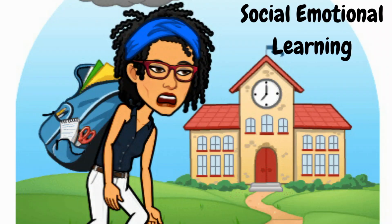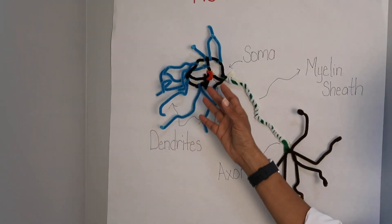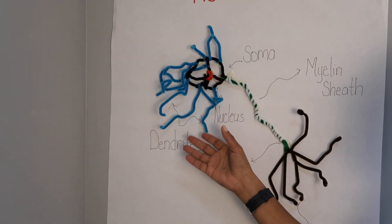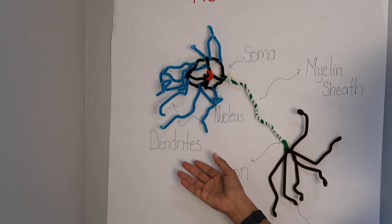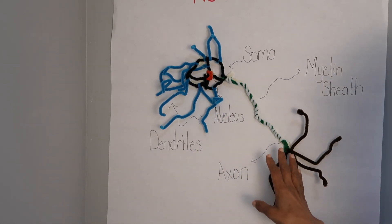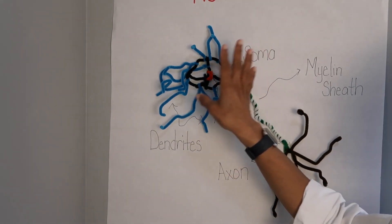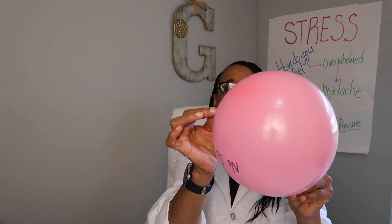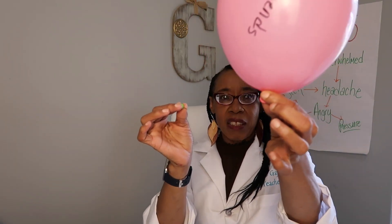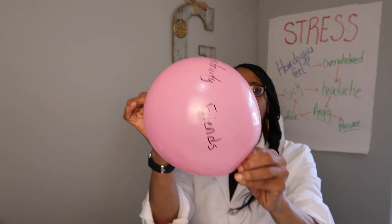I love social-emotional learning and getting kids to understand their brains. You learn something and it becomes part of your memory. You have to practice, and as you practice, the signals begin to shoot through. With social-emotional learning, I like to do activities that help students to recognize the anxieties or stresses that they're going through and how to release those stresses.